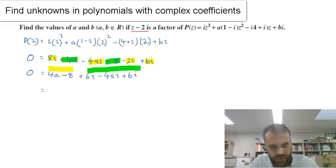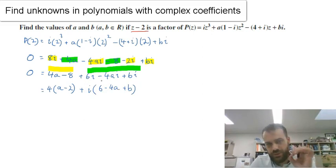So I'm just going to factorise this a little bit. So that's going to be 4a-2. And I'm going to factorise this by making i the common factor here. So that means that 4a-2 must be equal to 0, and this must also be equal to 0.